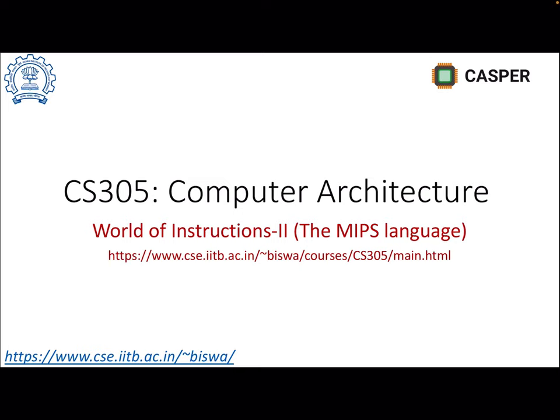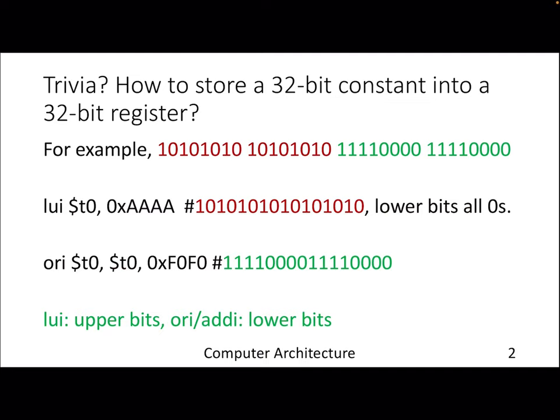In the last lecture, we stopped at a particular example. I left a few subtle points for you to find out. In that example, our goal was to store a 32-bit constant into a 32-bit register using instructions that operate on immediate or constant values but take only 16-bit values. The load upper immediate instruction operates on the upper bits, so the value gets stored in the upper 16 bits, whereas instructions like OR immediate operate on the lower 16 bits. The combination of these two instructions helps you load a 32-bit constant.